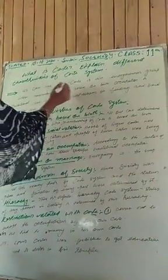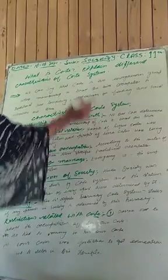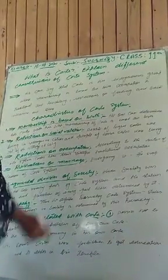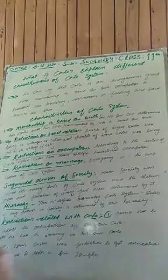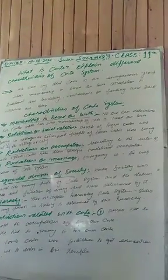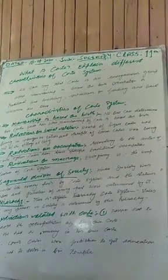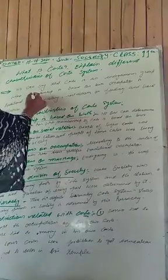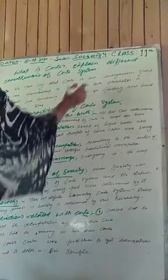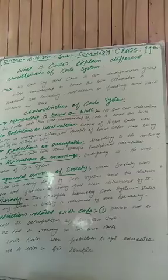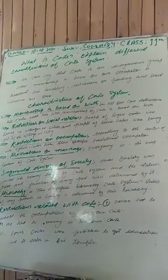We can say that caste is an endogamous group whose membership is based on birth. The caste is endogamous — members marry within the group. Membership is based on birth, and the occupation is traditional and hereditary.